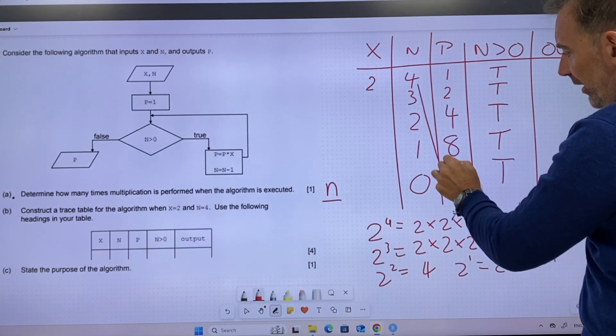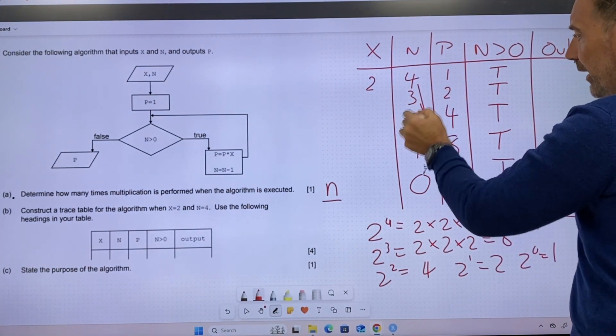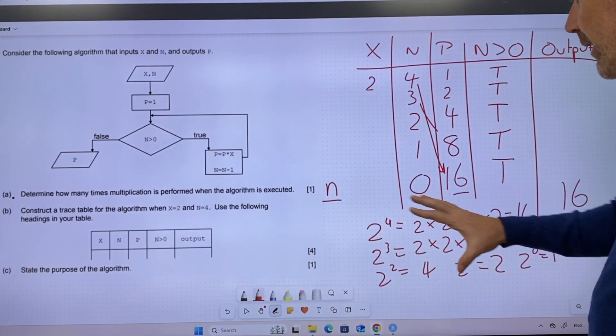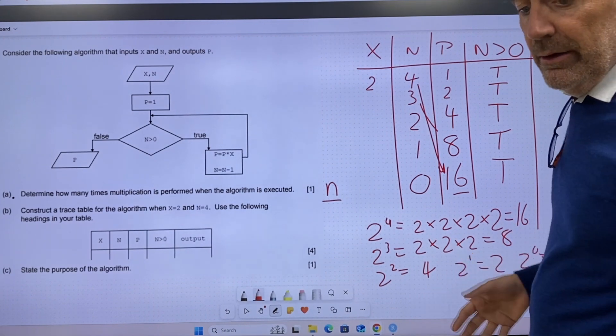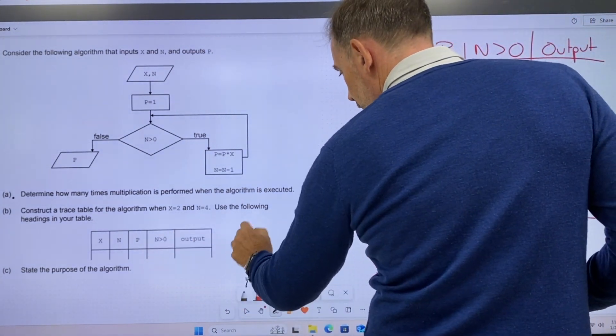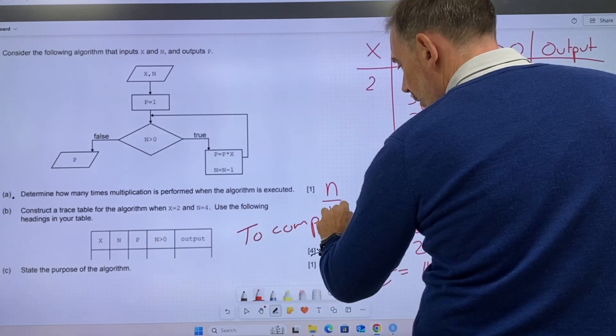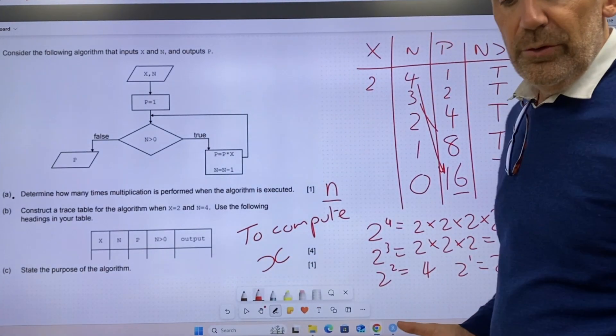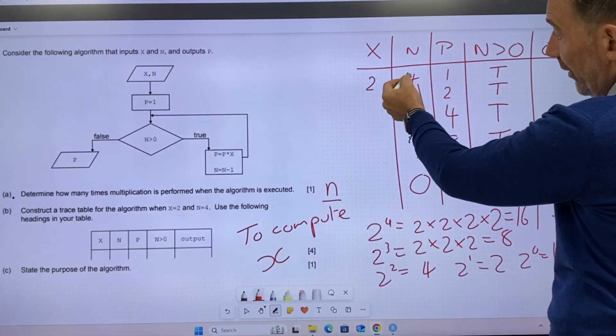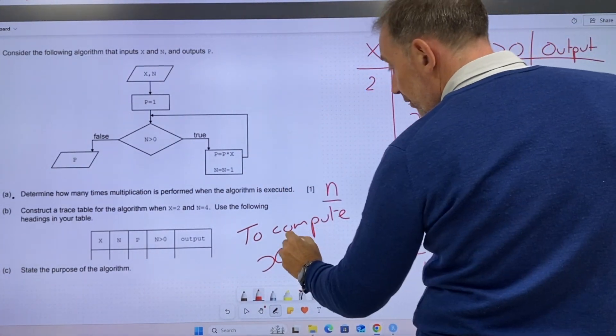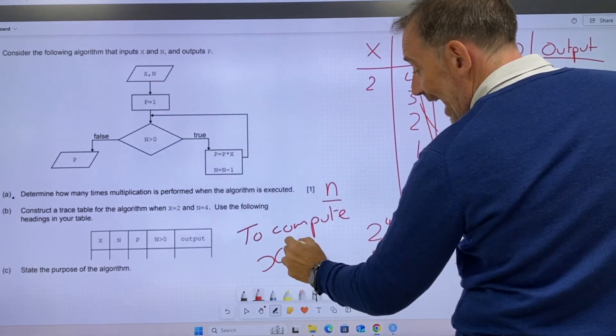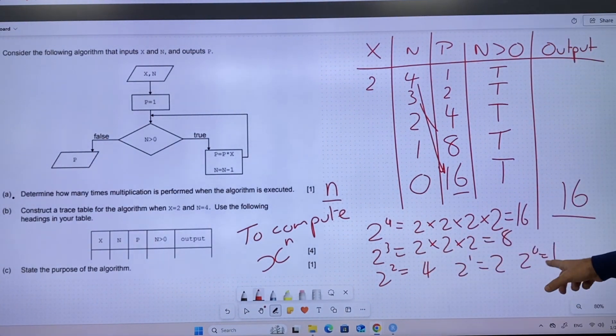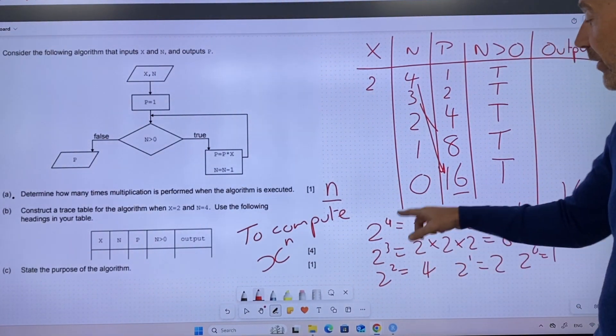So this obviously is linked to this. So looking at this, state the purpose of the algorithm. It's going to be to compute, x to the n. Based on these two figures, x to the n. Enter the zero, enter the one, enter the two, enter the three, enter the four.